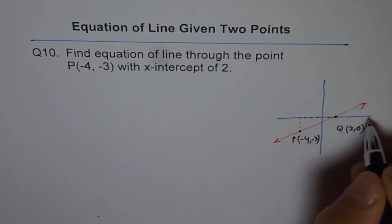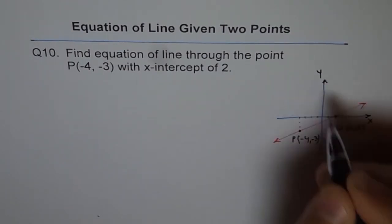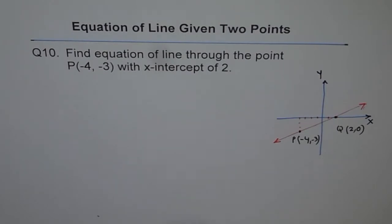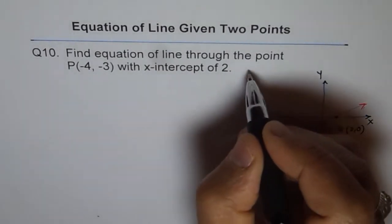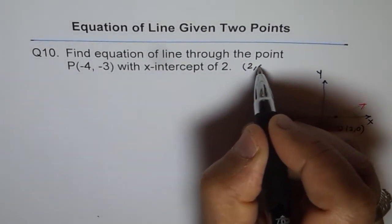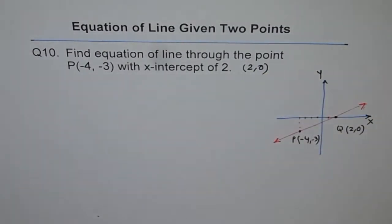And Q is 2 value of x and y is 0. On x-axis, the y value is always 0. So that's the x-intercept. So we could write this point as (2, 0). That's what it is.